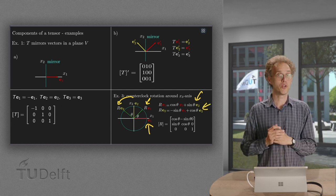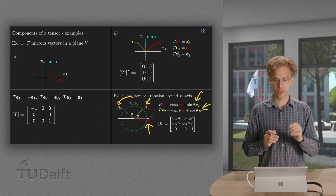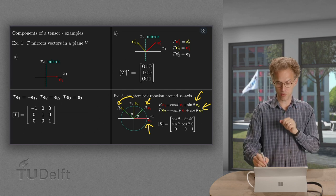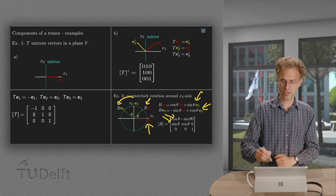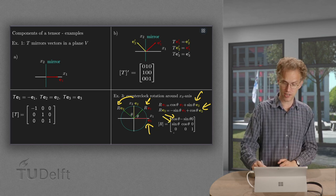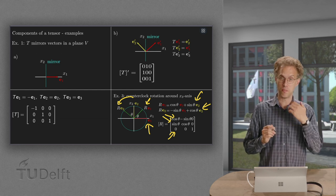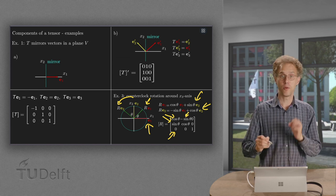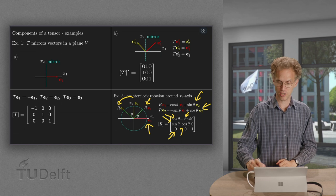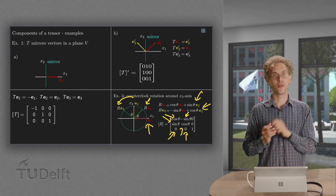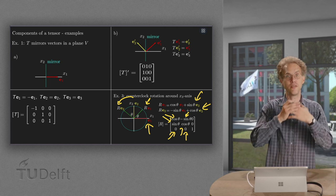So what do we get for our matrix? The image of e1 equals cosine theta times e1, so we get cosine theta, plus sine theta times e2, so we get sine theta, plus 0 times e3, so we get a 0 over there. The image of e2 equals minus sine theta times e1 plus cosine theta times e2, so that's why we get the cosine theta over there and a 0 over here. And then the third column is 0, 0, 1. So there we go, there we have the matrix of our rotation if we use the standard basis.